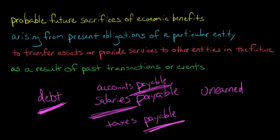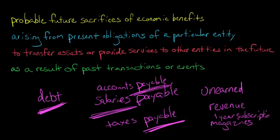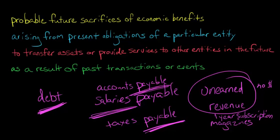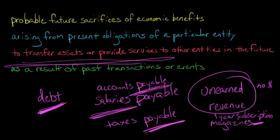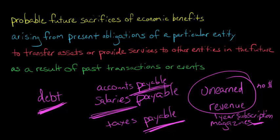There are also other things that don't have anything to do with debt or payables at all — something called unearned revenue. For example, let's say you make magazines and somebody pays you $20 for a one-year subscription. You've got the $20, but you don't recognize revenue. Instead it's unearned revenue, which is a liability. Even though you don't owe money, what you owe are magazines. You have this probable future sacrifice — you have to give up these magazines, which are assets and economic benefit. You have to transfer assets or provide services to that subscriber in the future. So that's a liability, even though it's not debt and not something that's really payable.